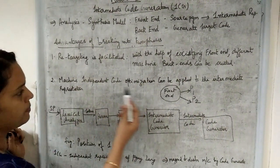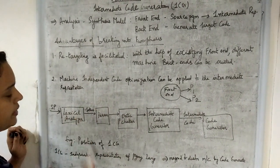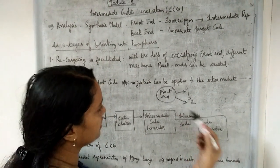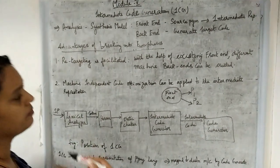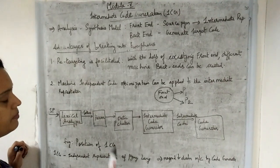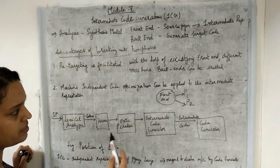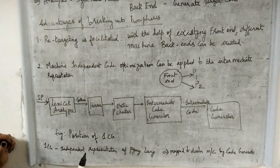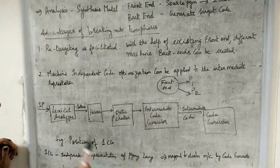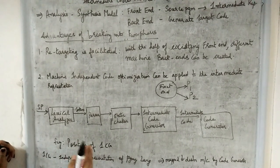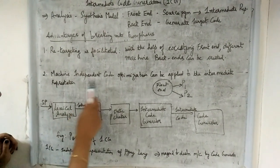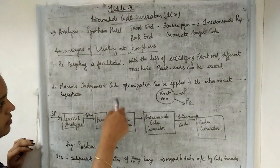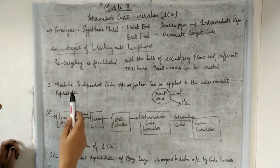The second advantage is that machine-independent code optimization can be applied to the intermediate representation. Code optimizations are classified into two types: machine-dependent and machine-independent. Since the intermediate representation from the frontend doesn't depend on the backend, machine-independent code optimization can be performed on it. This is an optional phase in the compilation process and will be discussed in the next module.